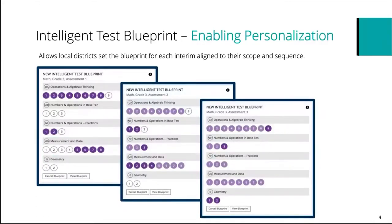This is what the intelligent test blueprint looks like. A blank blueprint would have all white bubbles. In this example for grade three math assessment one, the gray rows are domains — like operations and algebraic thinking — and the circles with numbers are the associated standards. When picking your scope and sequence, you click a bubble and it turns dark purple. For assessment one we've selected standards one through eight for operations and algebraic thinking, standards one and two for numbers and operations for fractions, and standards five through eight for measurement and data.